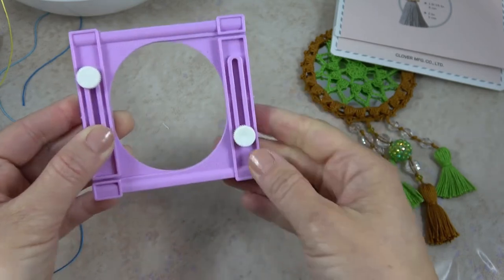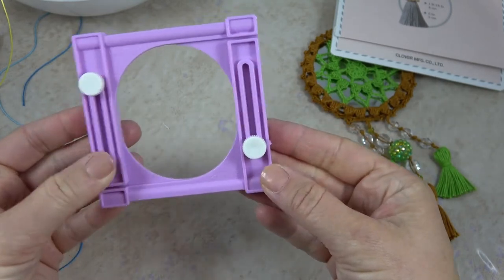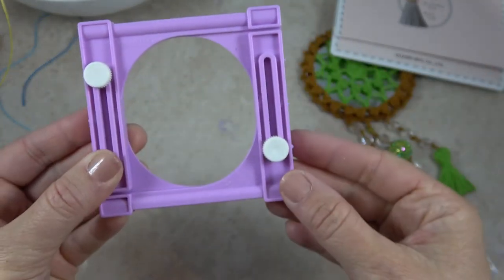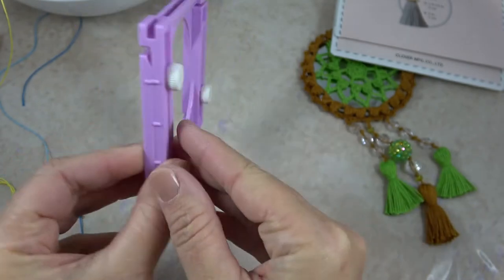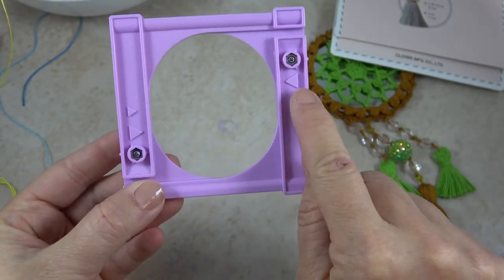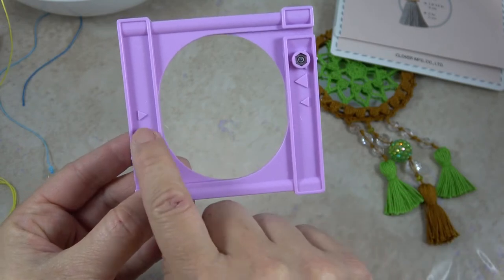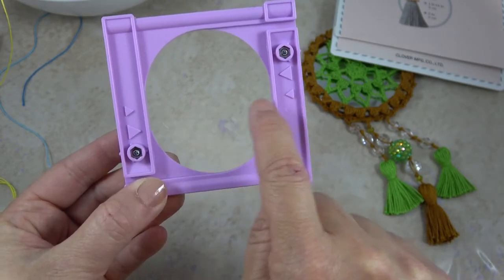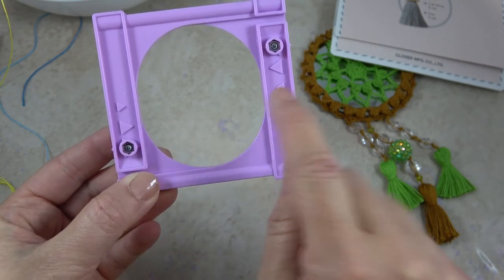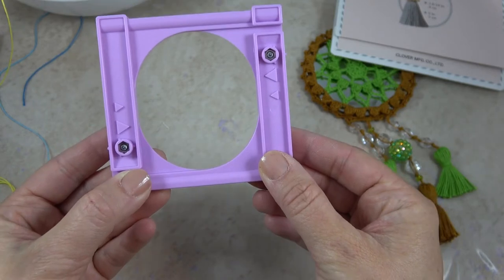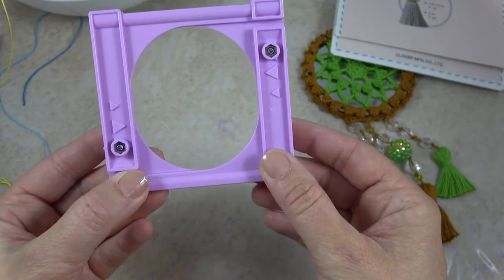And this here is considered the front of the gadget and you can see it says Clover right there. You're actually going to want to start winding the thread on the back and here you can see these arrows, this small arrow and this small arrow, show you the center of the smallest tassel and you'll need that for when you're joining the threads together. I'll show you.